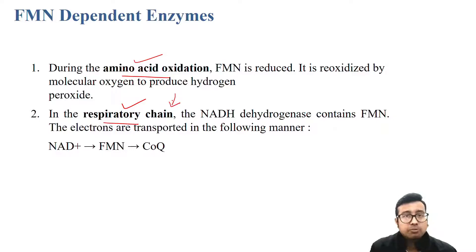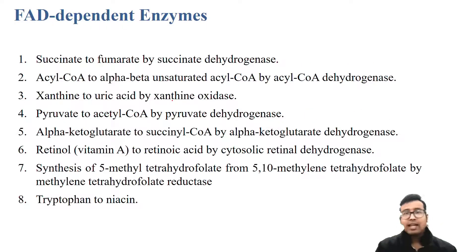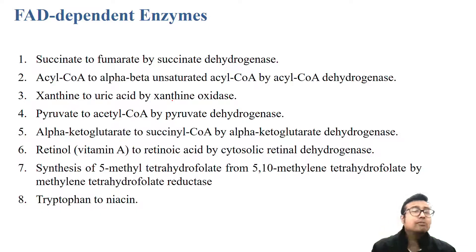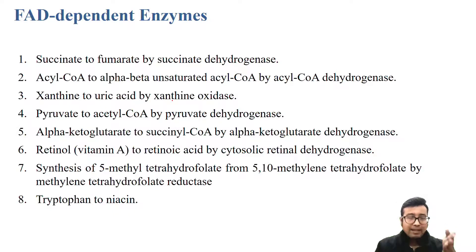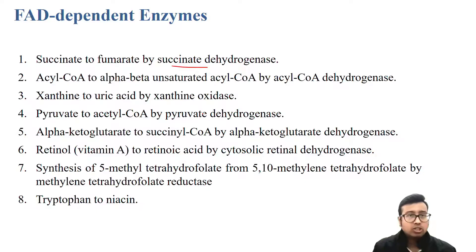Respiratory chain, electron transport chain, complex one — very important. That is the most important use for FMN and FADH2 for first year undergraduate students. Now let us learn a few enzyme names. Succinate to fumarate by succinate dehydrogenase enzyme of the TCA cycle — must remember.